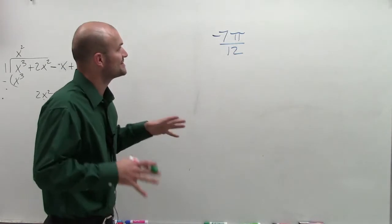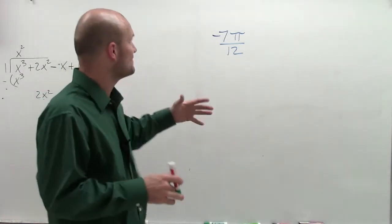Here we go. Welcome. So what I want to do is convert my radians, negative 7 pi over 12.